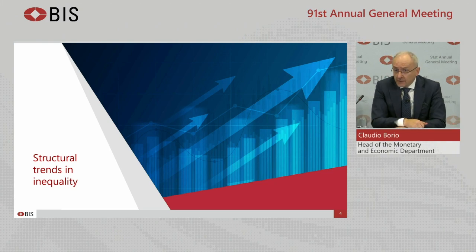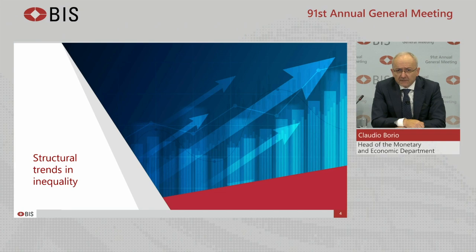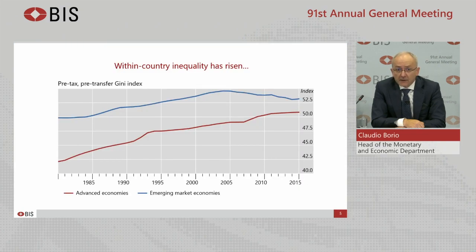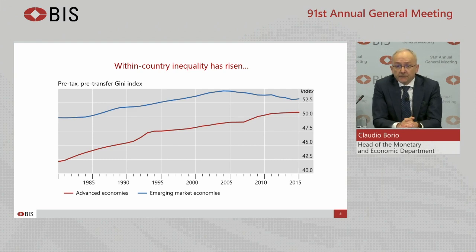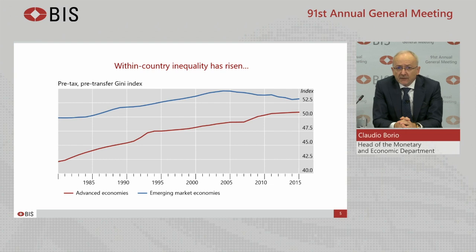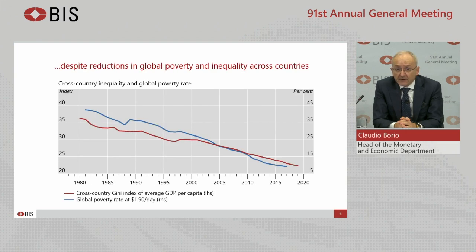Inequality within countries has been rising since the early 1980s in both advanced and emerging market economies. We can see this in this graph where the red line refers to advanced economies and the blue line to emerging market economies. While these lines measure income inequality, here based on the standard Gini coefficient, the same is true of wealth inequality, which admittedly is somewhat harder to measure. This has happened even as inequality across countries has declined, the red line, and so has poverty, the blue line.